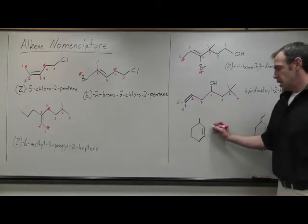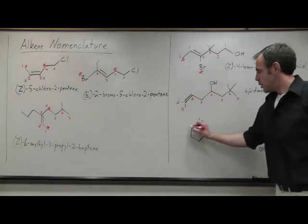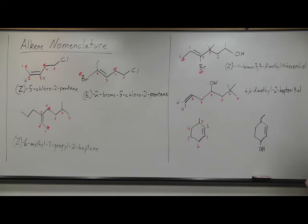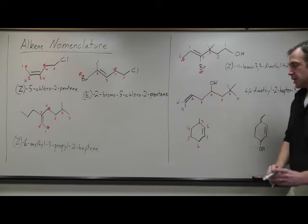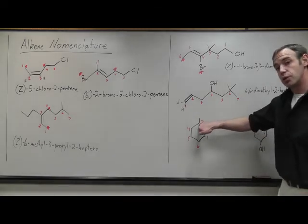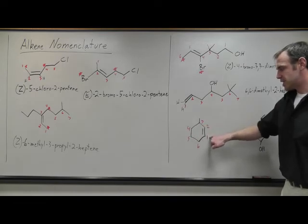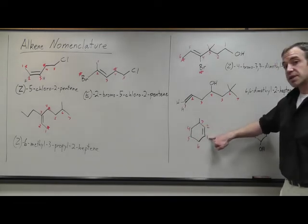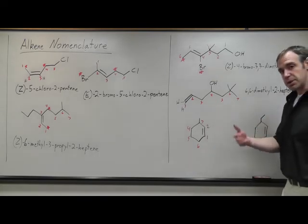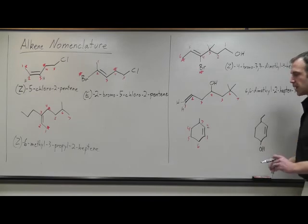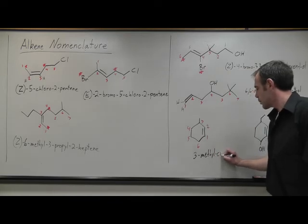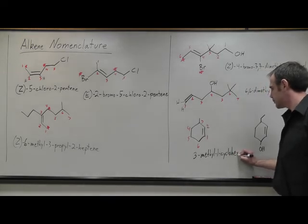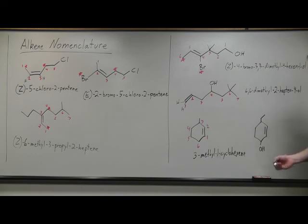With cyclos, we number the compound in such a way that both alkene carbons get low numbers. So for example, you would not number this one then two for the methyl group because that would give you a six down here. So your numbering scheme has to go this way to go through both alkene carbons first before you go to the substituent.